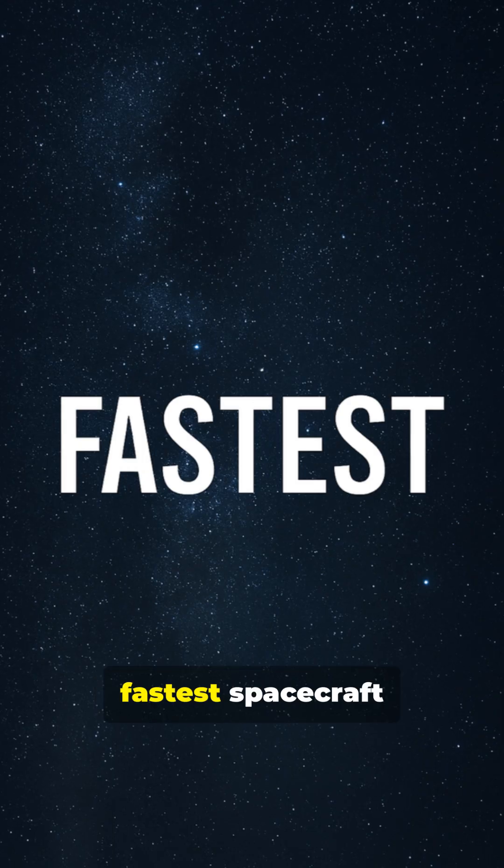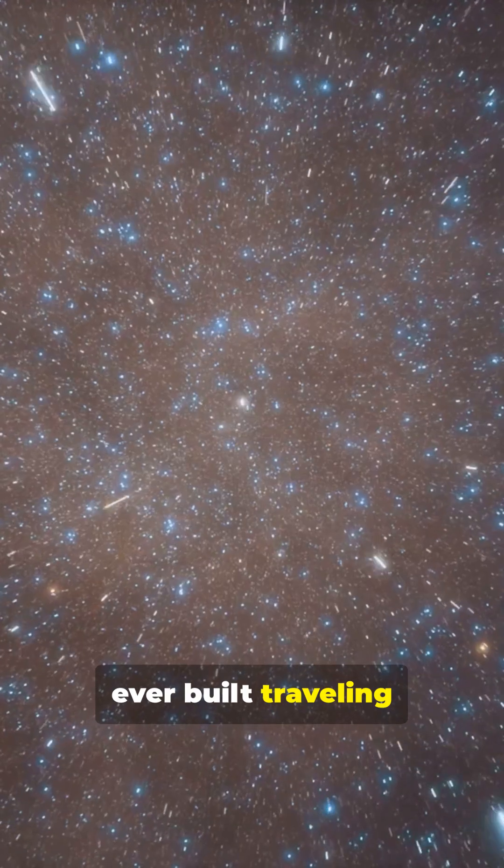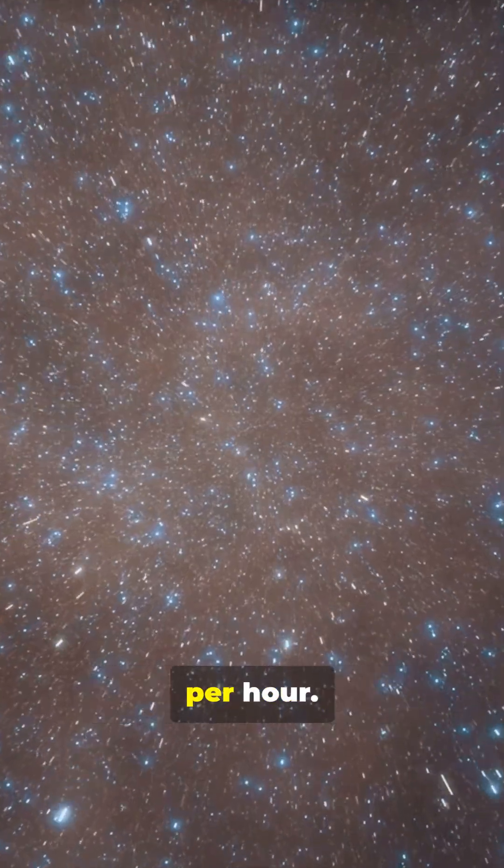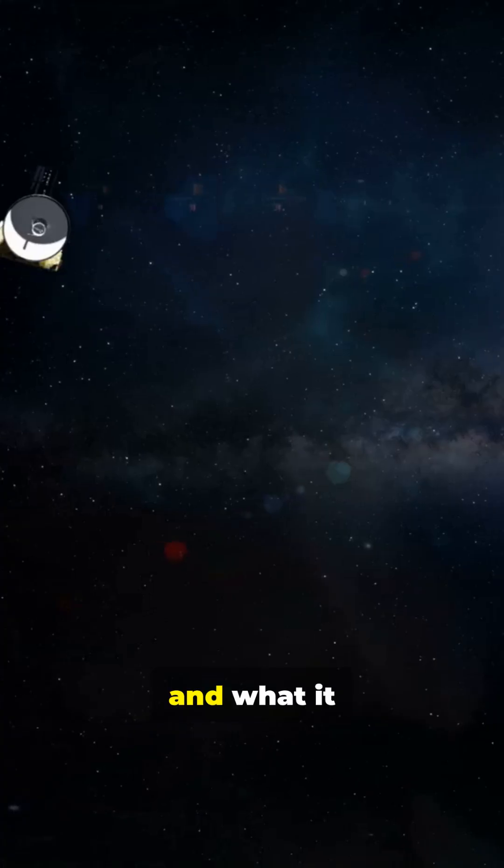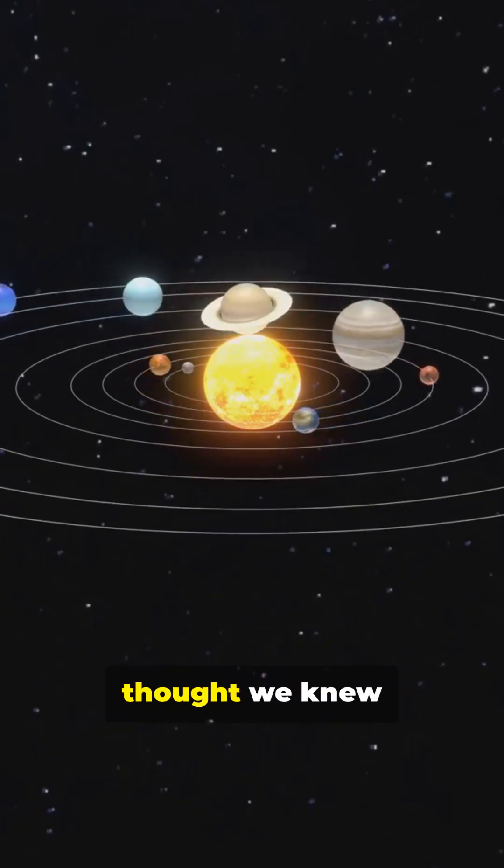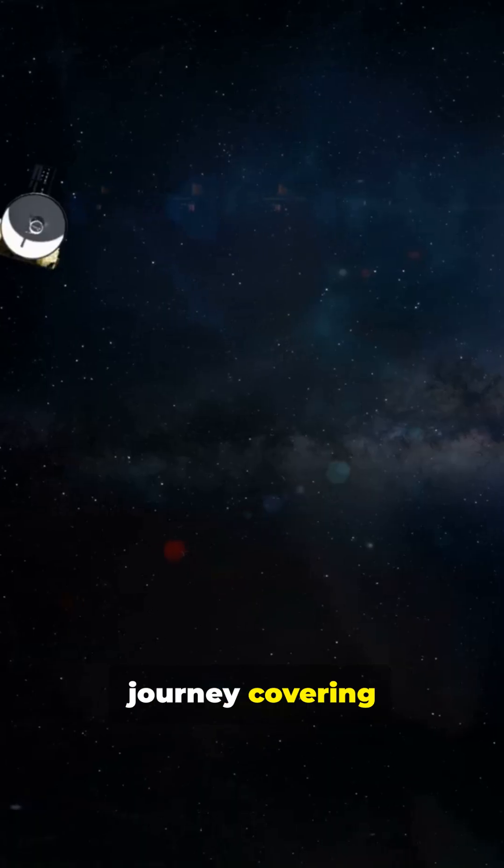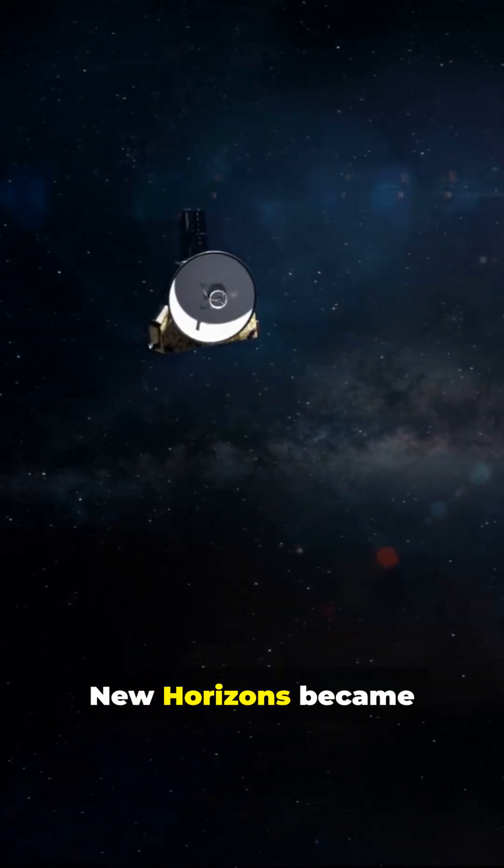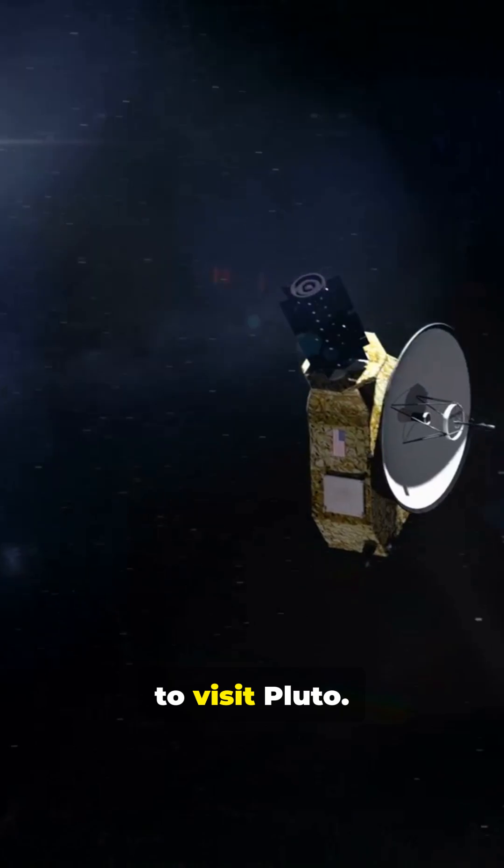In 2006, NASA launched the fastest spacecraft ever built, traveling at over 36,000 miles per hour. This is New Horizons, and what it discovered changed everything we thought we knew about our solar system. After a nine-year journey covering three billion miles, New Horizons became the first spacecraft to visit Pluto.